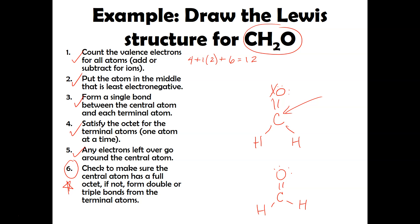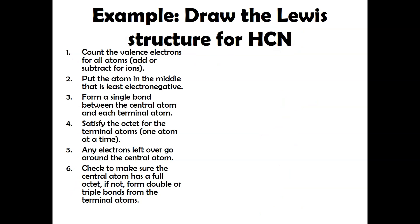So again, notice that I'm not making double or triple bonds unless I absolutely need to. You're only going to do it when the central atom is not satisfied. Let's take a look at another example — HCN.